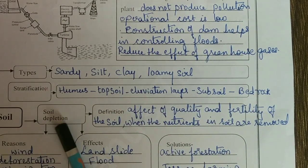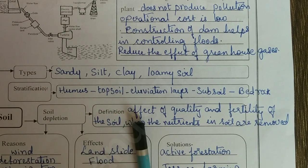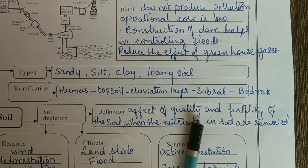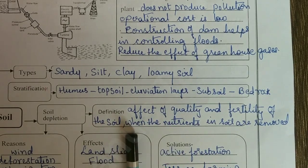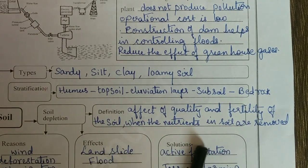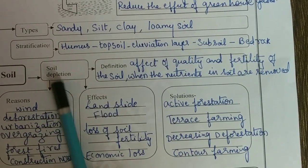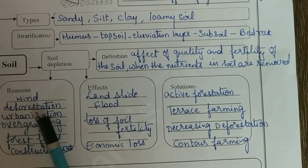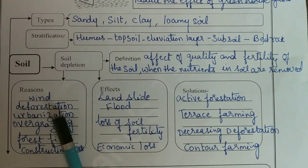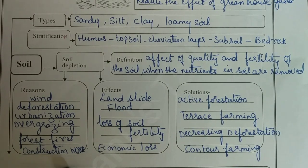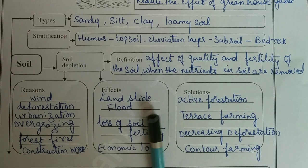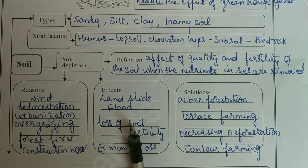Soil depletion definition: effect on quality and fertility of the soil when the nutrients in soil are removed. Reasons for soil depletion: wind, deforestation, urbanization, overgrazing, forest fires, and construction work. Effects: landslide, flood, loss of soil fertility, economic loss.